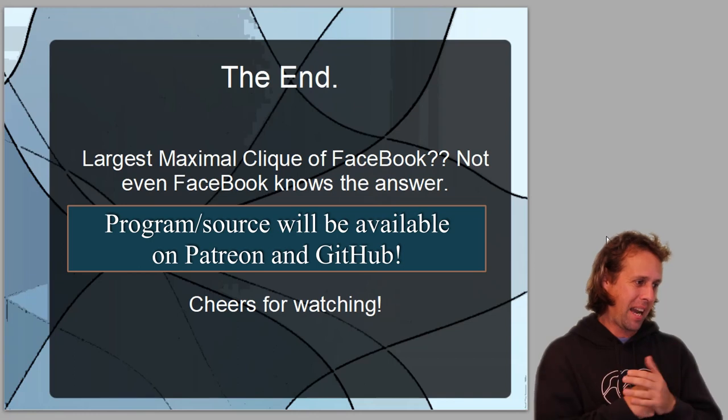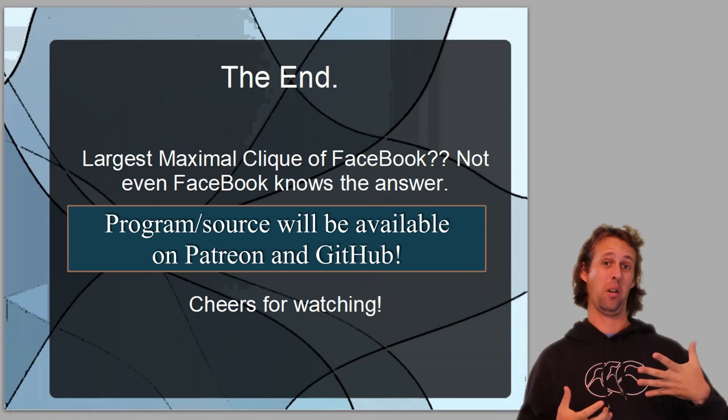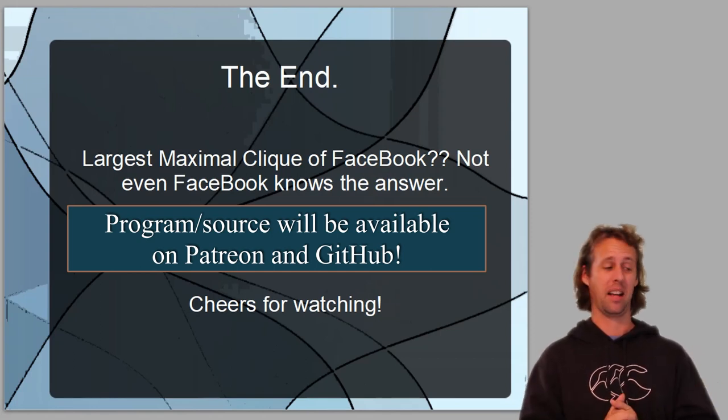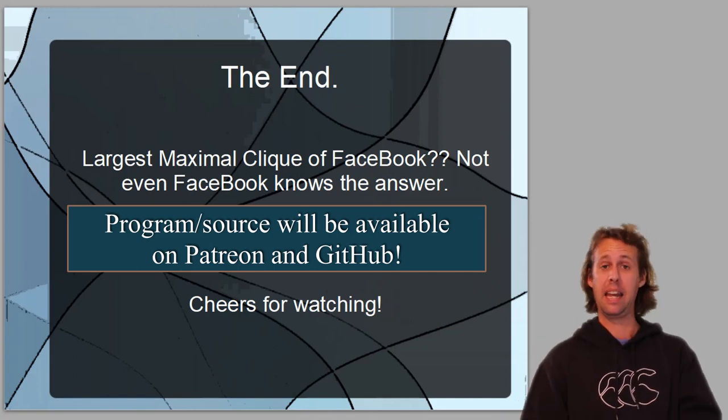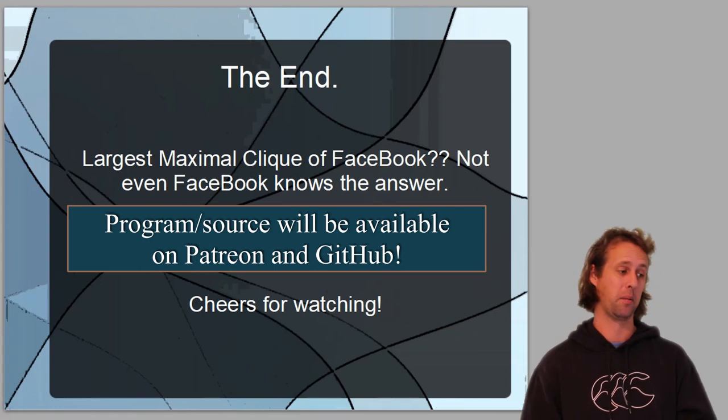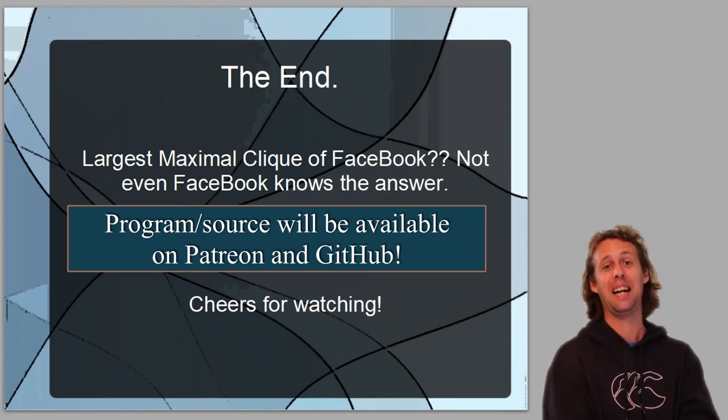So the largest maximal clique of Facebook, it's not known. Facebook is obviously a network of not just 10 or 20 people. It's millions of people, and not even Facebook knows the answer to the largest maximal clique. It might be possible to figure it out. If P equals NP, then maybe there's an algorithm out there that could solve something like that and run on a classical computer. But as far as people know, as far as they guess, there is no such algorithm. Other than that, I just want to say thank you very much for watching, and have a good one.